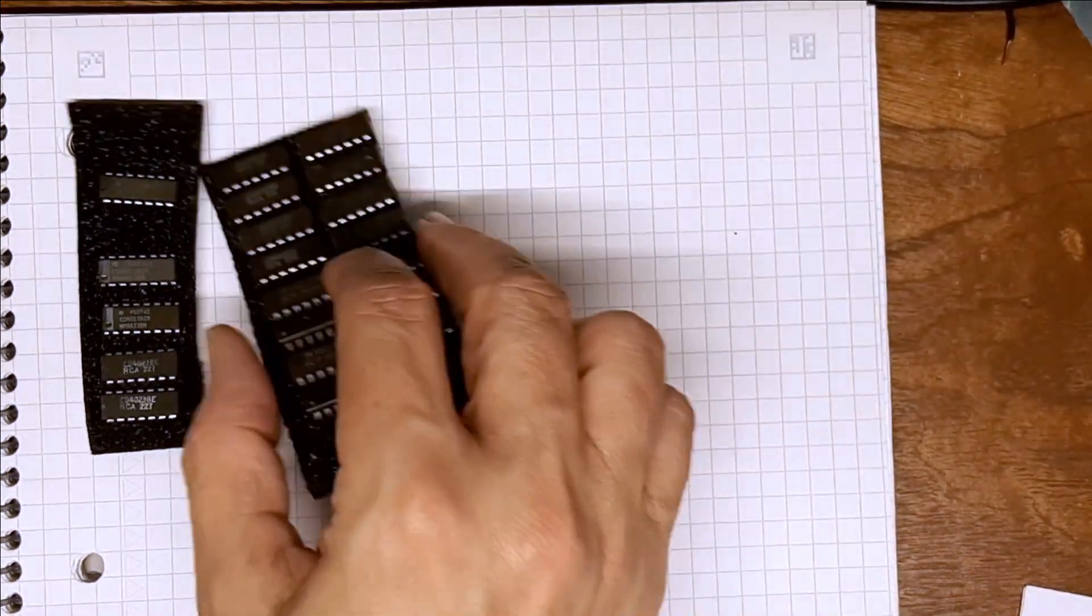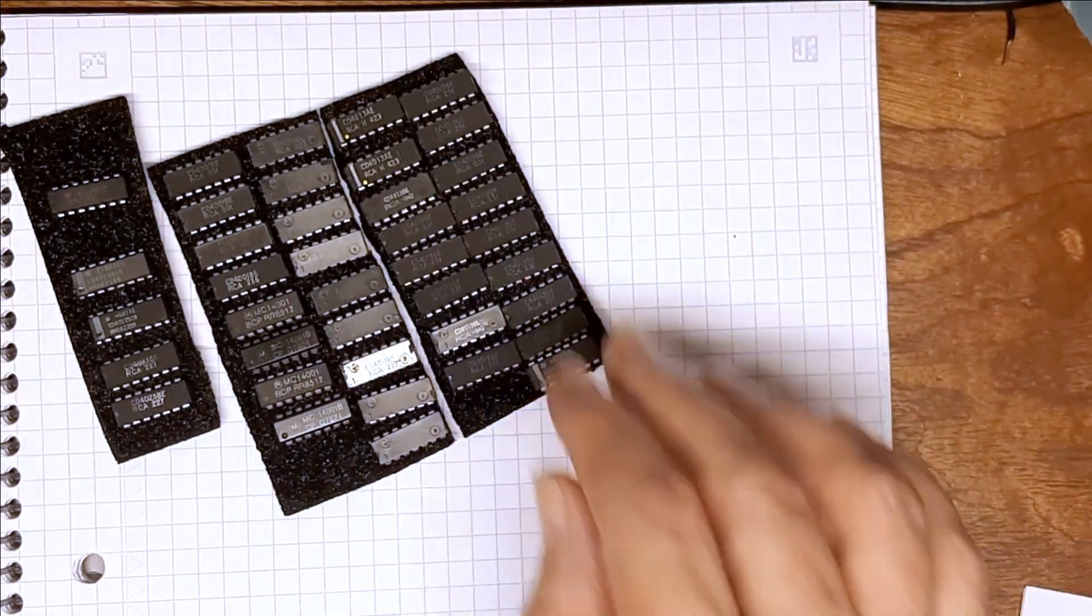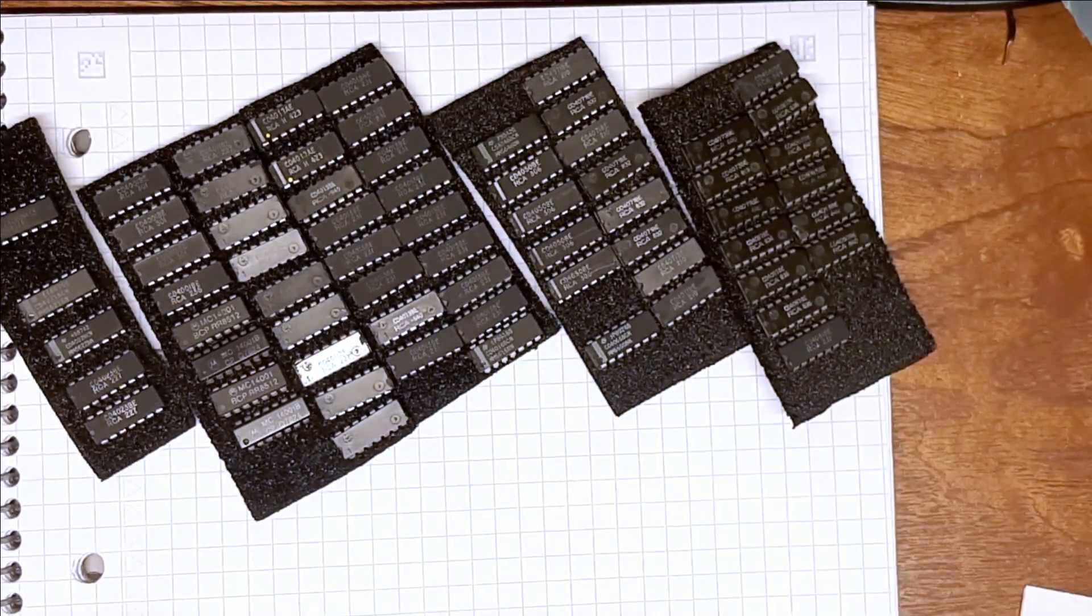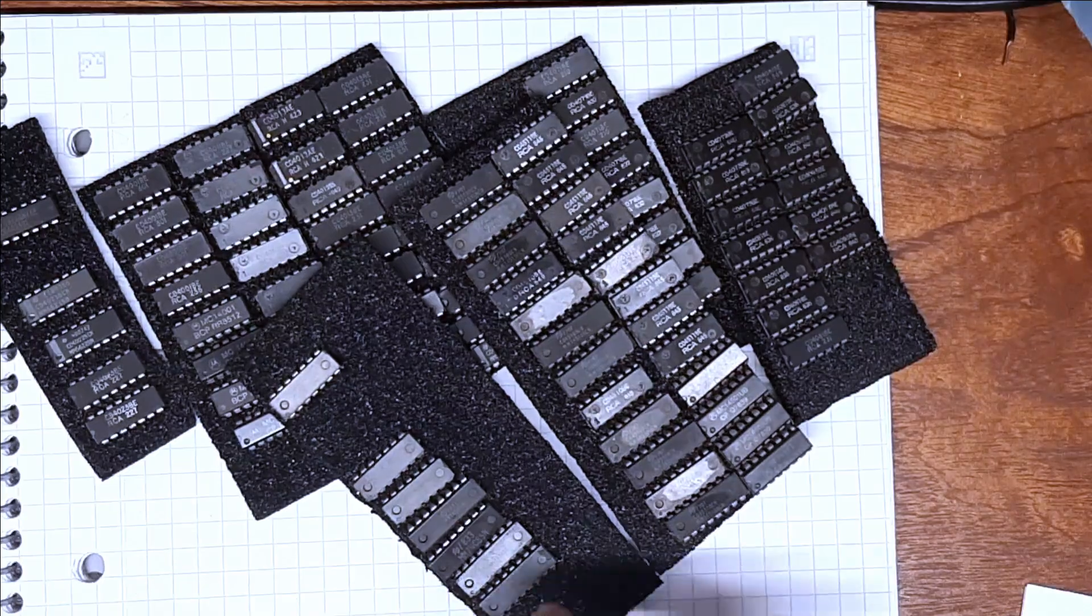I do have a small stash of random 4000 series CMOS parts, so I'll try to use some of these if I can. I don't want to have to order anything for this. I really would like to do it with the parts I've got on hand.